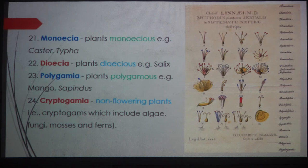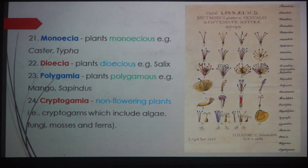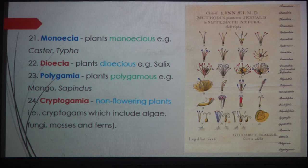Class twenty-four is Cryptogamia: the non-flowering plants. Linnaeus classified the entire plant kingdom such that the first 23 classes are related to flowering or angiosperm plants, and class twenty-four covers all lower, non-flowering plants — algae, fungi, mosses, and ferns — gathered together in one class. On the right side there is a picture from Linnaeus's literature showing figures of different conditions: monandria, diandria, triandria, tetrandria, and the monadelphous, diadelphous, polyadelphous conditions.